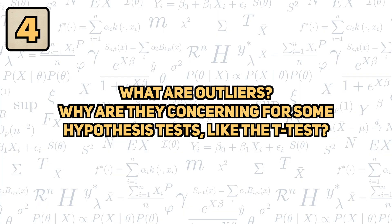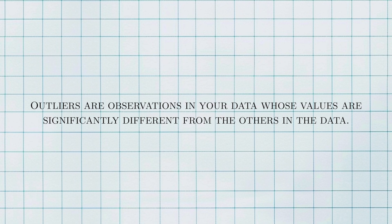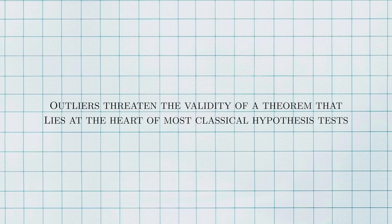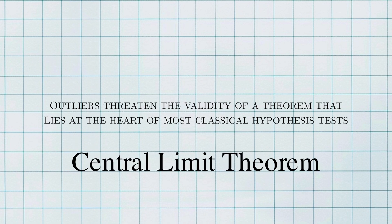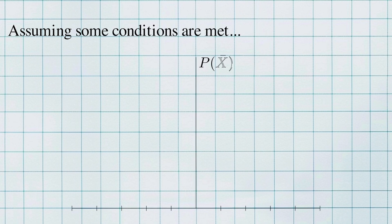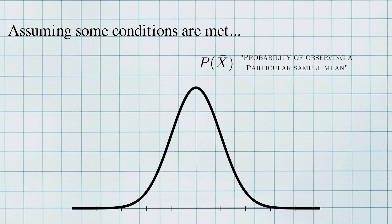What are outliers and why are they concerning for some hypothesis tests like the t-test? Outliers are observations in the data whose value is significantly different from others in the data. What constitutes significantly different depends on what the data looks like, but it's kind of like — you know it when you see it. The reason outliers are dangerous is because they threaten the validity of a theorem that lies at the heart of several classic hypothesis tests. This theorem is the central limit theorem, which I'll refer to as CLT. Assuming that the conditions of the theorem are met, CLT tells us that the sample mean has a very convenient distribution — a normal distribution.